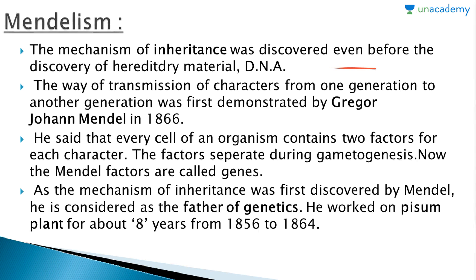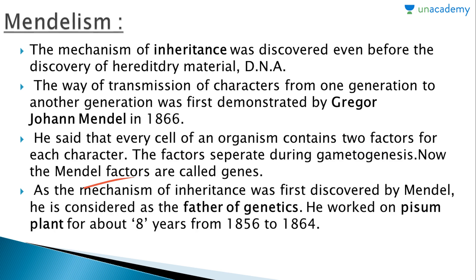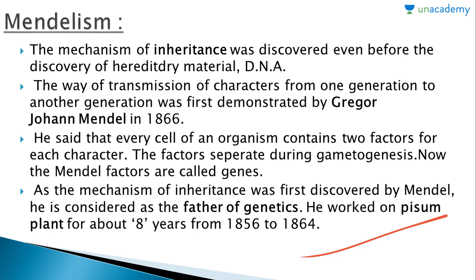The mechanism of inheritance was discovered even before the discovery of hereditary material, that is DNA. The way of transmission of characters from one generation to another was demonstrated by Gregor John Mendel, firstly in 1866. He said that every cell of an organism contains two factors for each character, and these factors separate during gametogenesis. These Mendel factors are now called genes. As the mechanism of inheritance was first discovered by Mendel, he is considered the father of genetics. He worked on the Pisum sativum plant for about eight years, from 1856 to 1864.